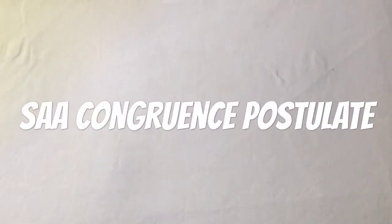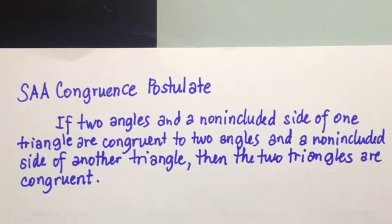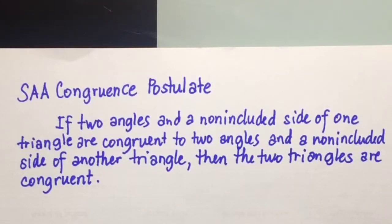In this video, I'm going to discuss the SAA congruence postulate. The SAA congruence postulate states that if two angles and a non-included side of one triangle are congruent to two angles and a non-included side of another triangle, then the two triangles are congruent.